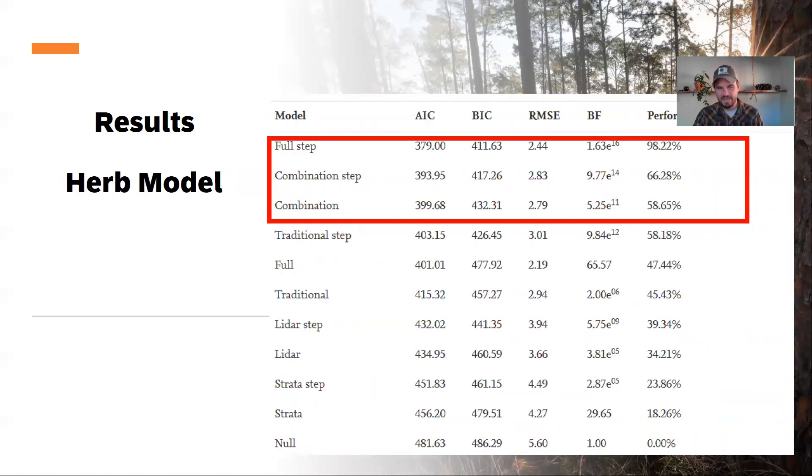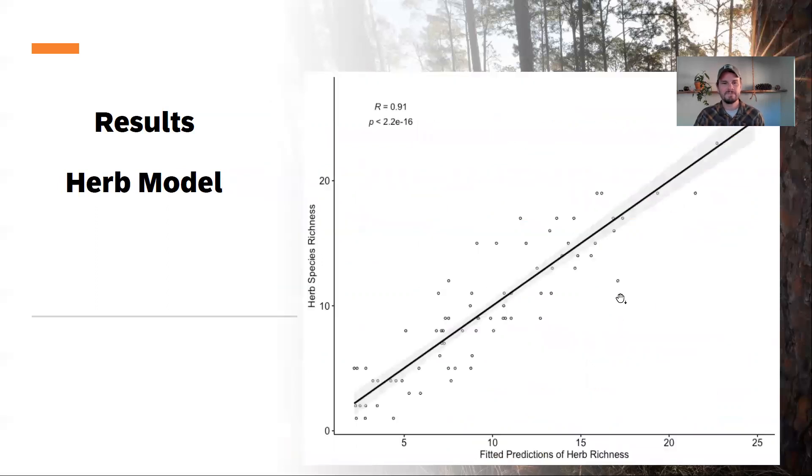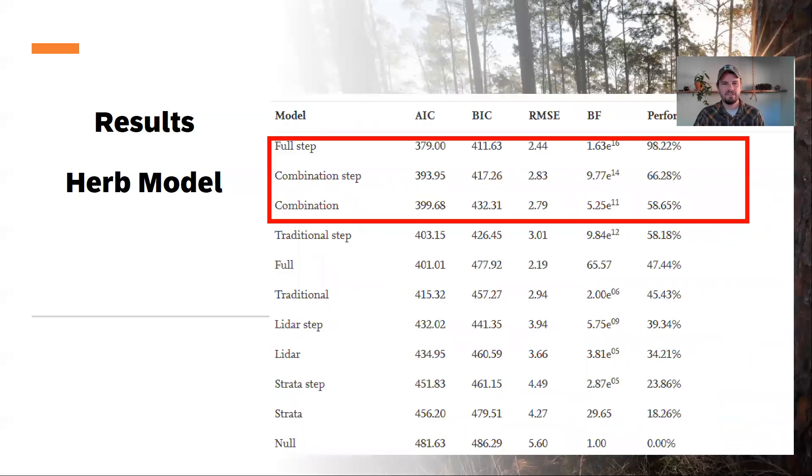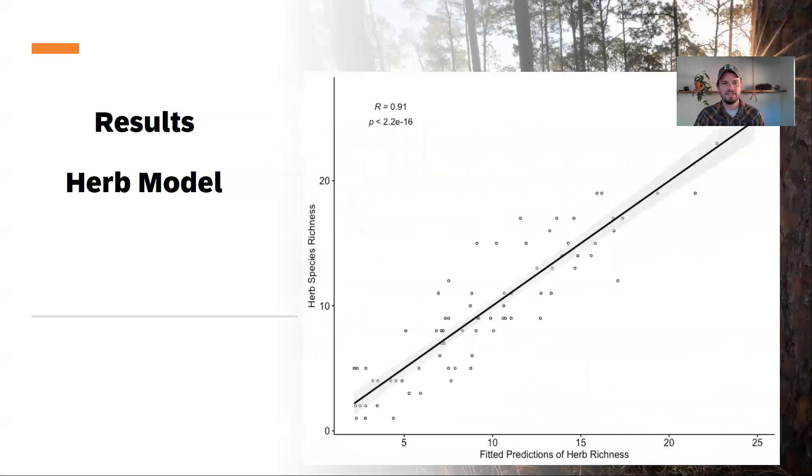And the herb model. Again, we had a combination of LiDAR and traditional metrics rounding out all the best performing models. And the best fit here of all the models for herb species richness, which accounted for most of the species in the plot. A good fit here, high R squared and very significant fit there. Certainly could be used as an index for most monitoring programs.